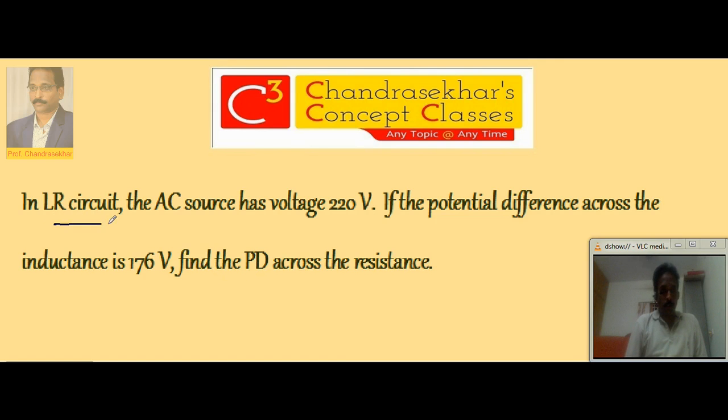In LR circuit, the AC source has voltage 220V. If the potential difference across the inductance is 176V, find the potential difference across the resistance.